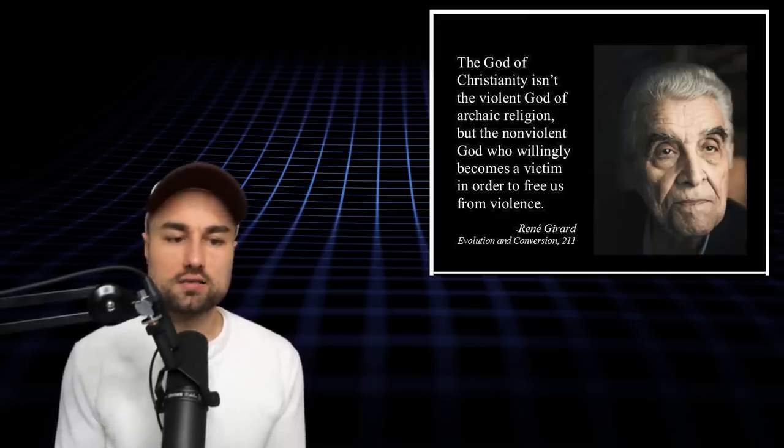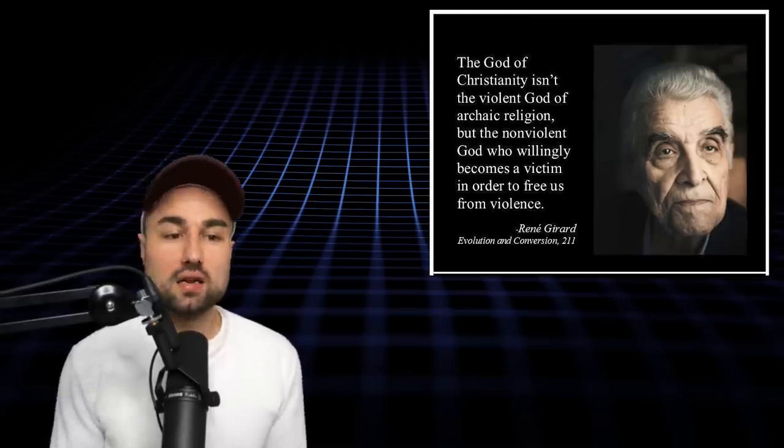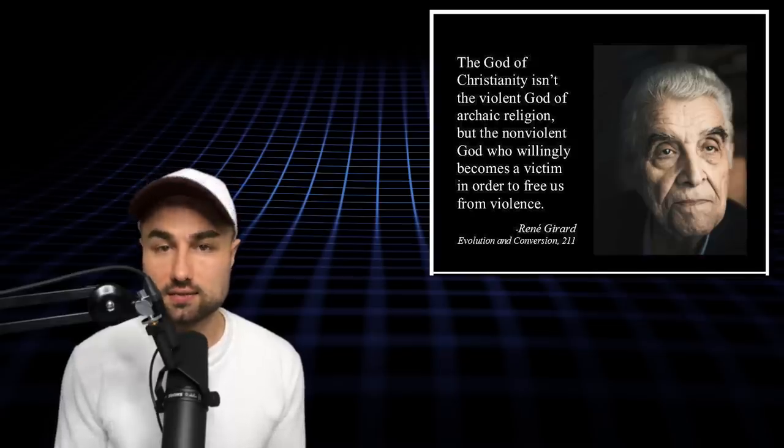The mechanism requires the mob to misknow the victim and to believe that they are truly guilty and deserve death. However, by declaring himself a scapegoat, Girard believes Jesus breaks the cycle of desire, violence, and lies by forcing people to see him as the perfect innocence that he is.